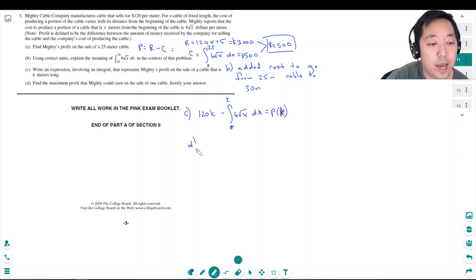Find the maximum profit that Mighty could earn on the sale of one cable and justify your answer. Well, the maximum is when I want to maximize P, so I'm going to take the derivative of this with respect to k. I get 120 minus the derivative of this with respect to k by the fundamental theorem of calculus is 6√k.